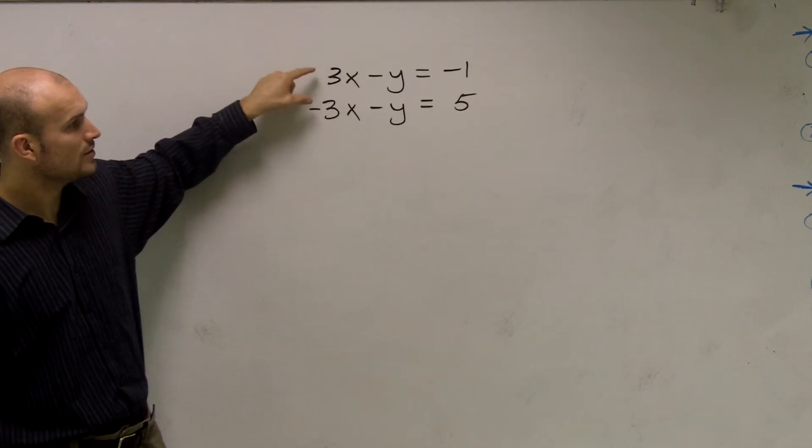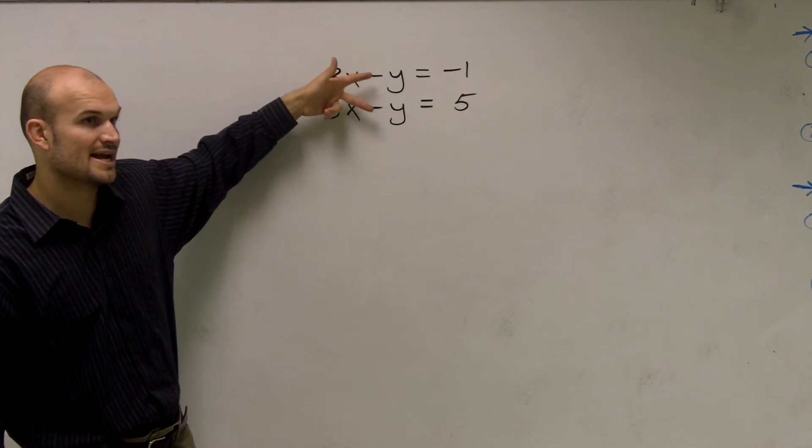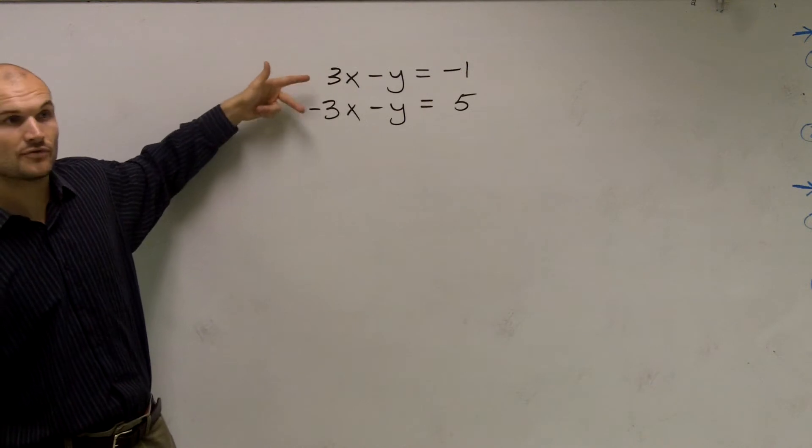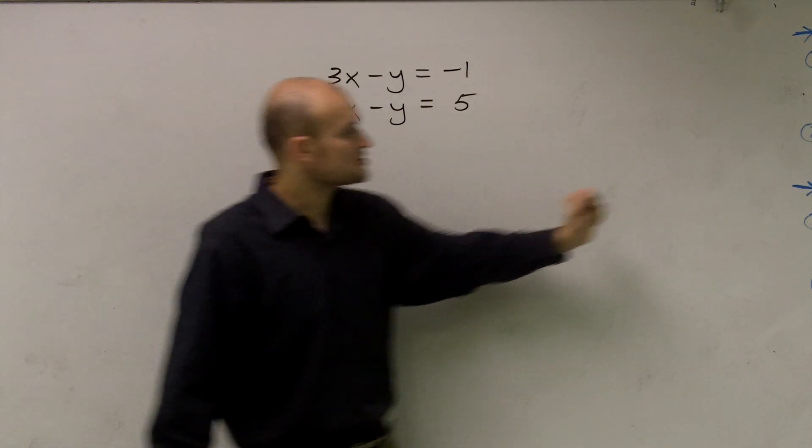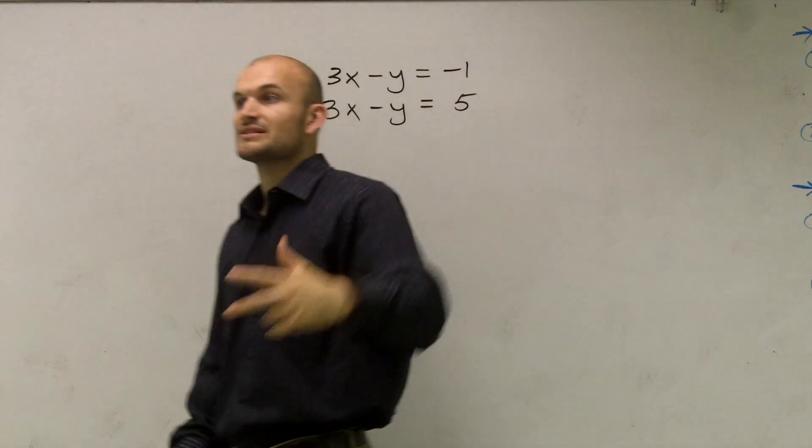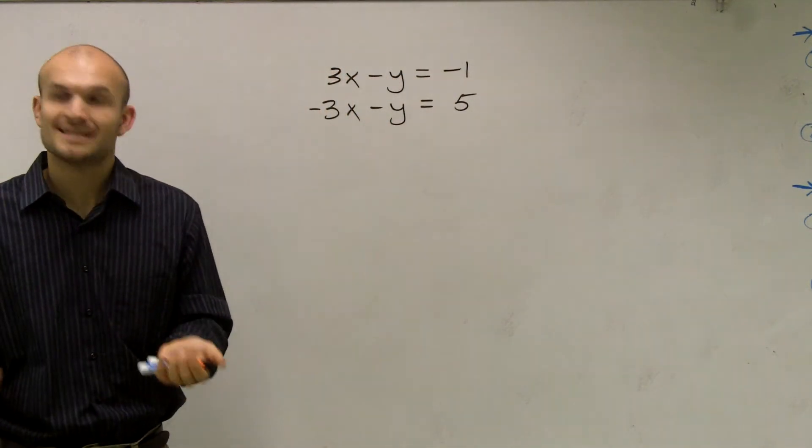Now the difference, though, is instead of here, they both have a negative 1, right, a negative sign. So they're both negative. Here, one is a positive 3 and one is a negative 3. So when I have the same coefficient but with different signs, I can now use elimination with addition.